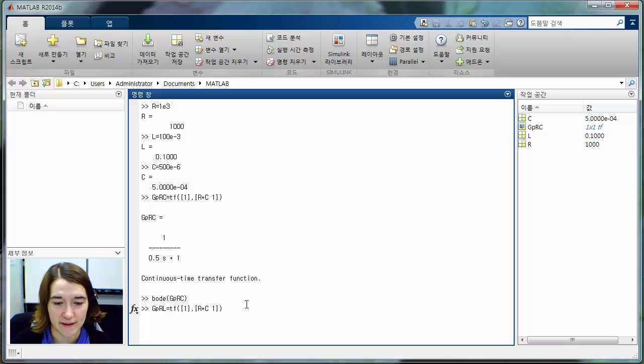So in the numerator, this time we want LS. So we need to make L for the coefficient of the S, and then there's no constant, so we make a 0 here. Then for the bottom, we need L times S plus R. So that should be correct.